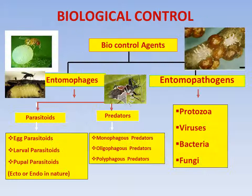Biological control agents are divided into two types: entomophages and entomopathogens. Entomophages are further divided into parasitoids and predators. Entomopathogens are divided into protozoa, viruses, bacteria, and fungi.